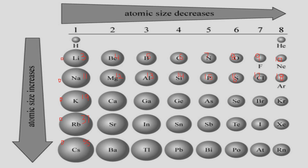In period number 2, the size of the atom is continuously decreasing due to the addition of protons. It is easier to remove an electron from a bigger atom like lithium, where valence shell electrons are farther from the nucleus, compared to a smaller atom like neon at the end of the period.